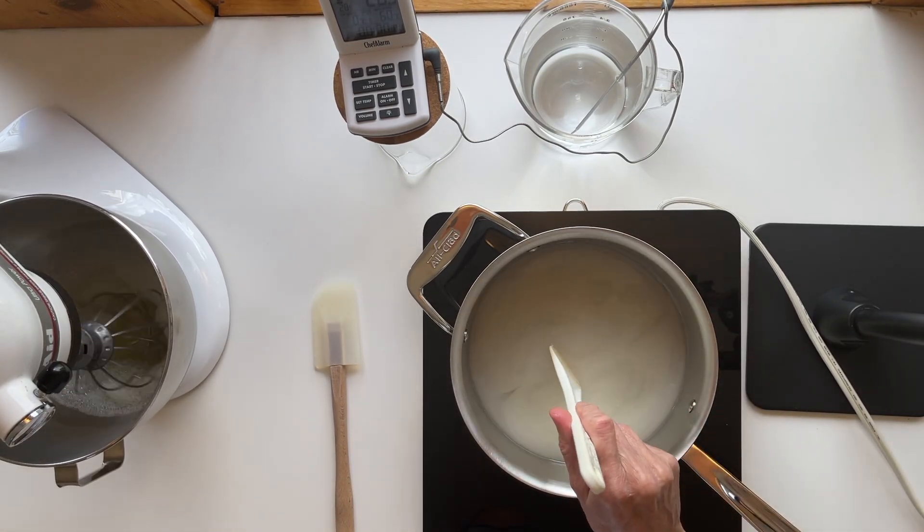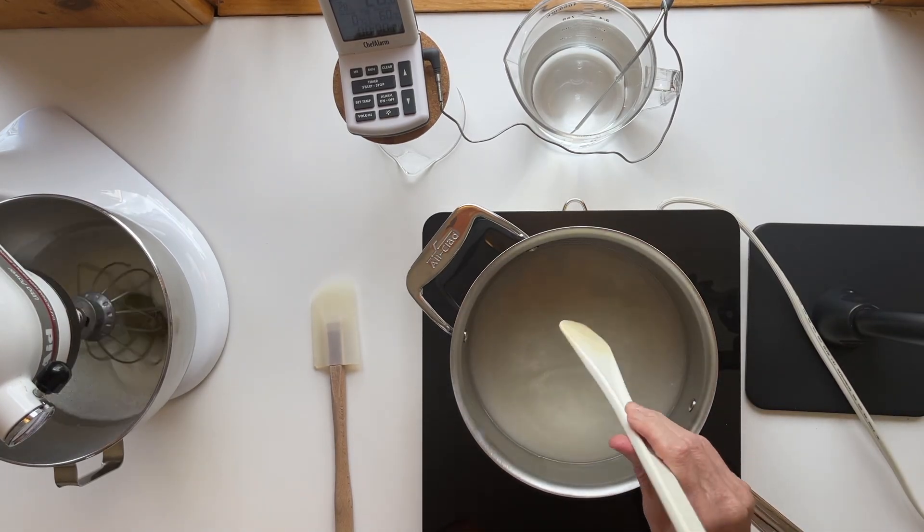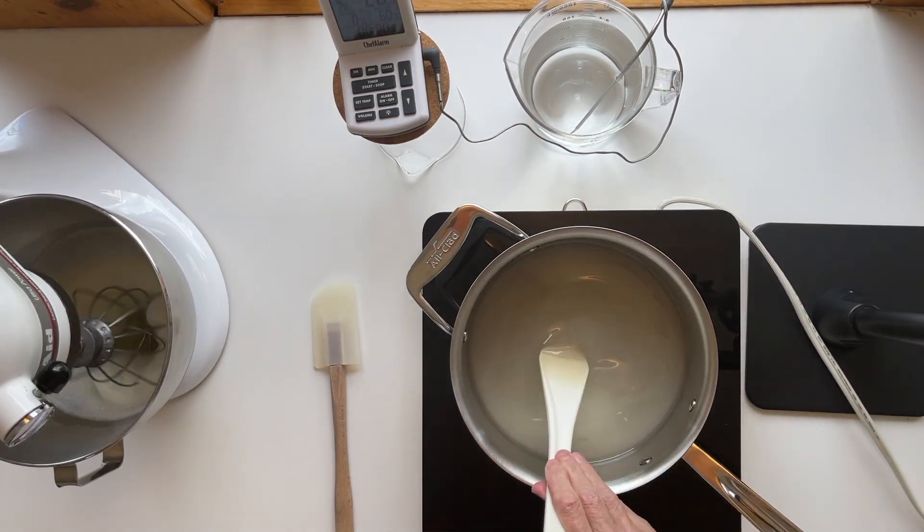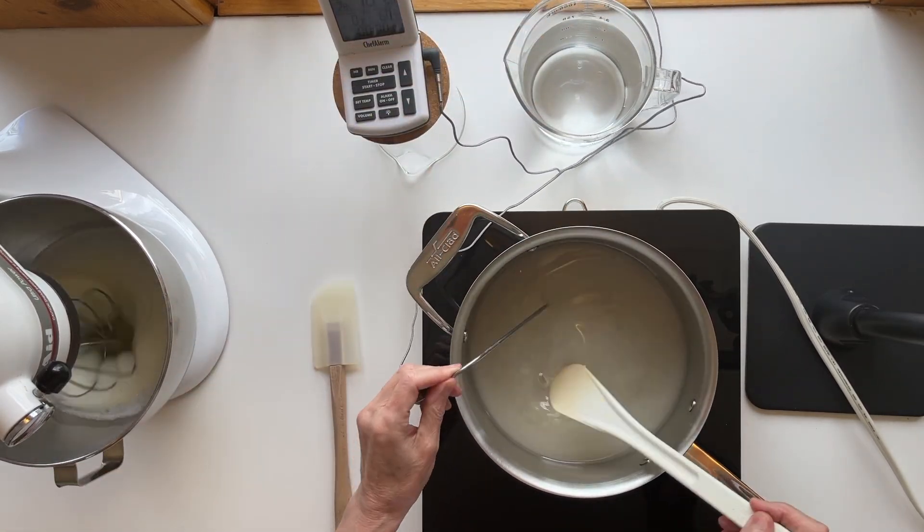All I have to do is move that spatula just a tiny bit and I can feel grains. So instead of worrying if I'm cooking it too fast, I'm just going to pull it off the heat or turn the heat way down.